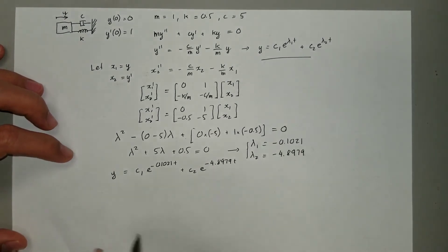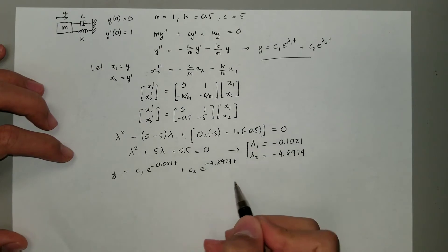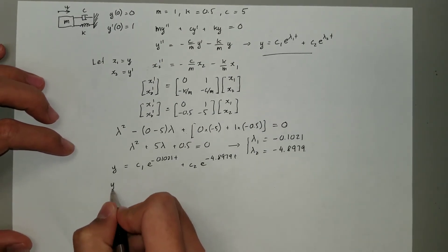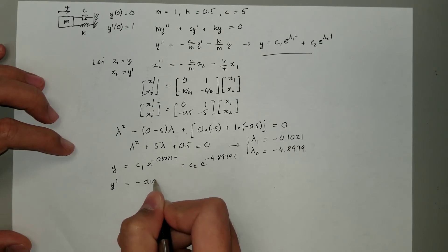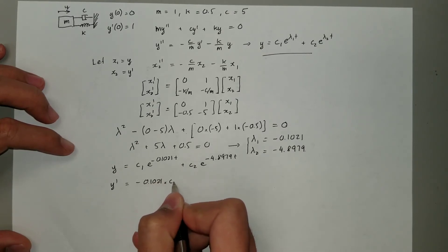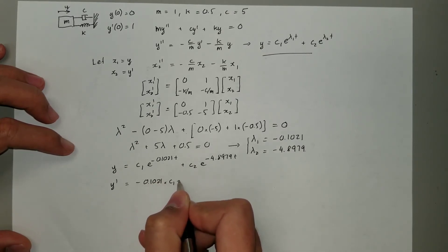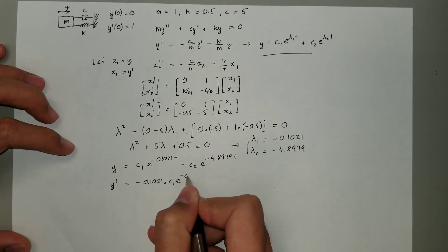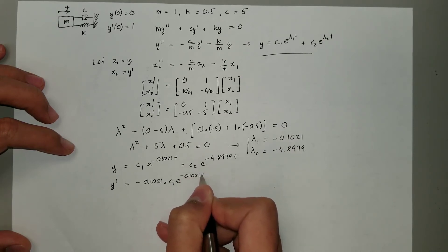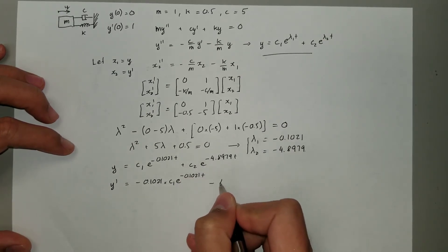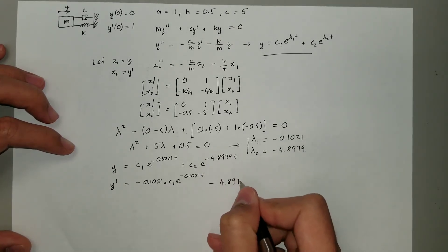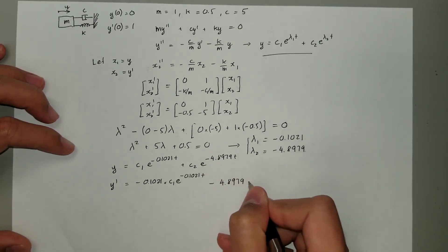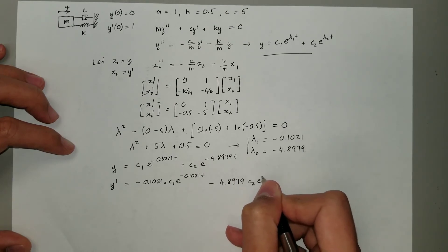Next, we differentiate y with respect to t to get y' equals -0.1021 times c1 e to the -0.1021t minus 4.8979 times c2 times e to the -4.8979t.